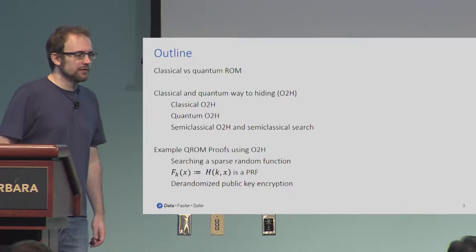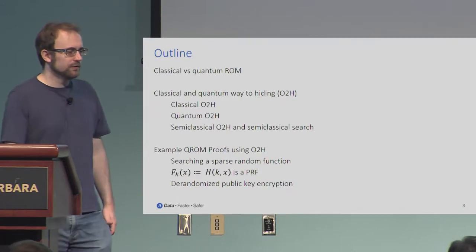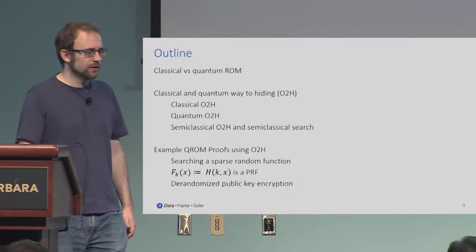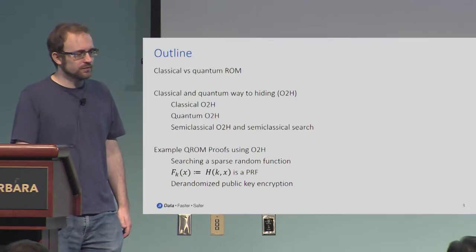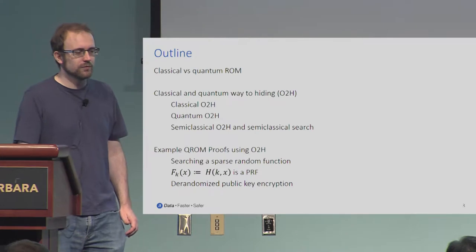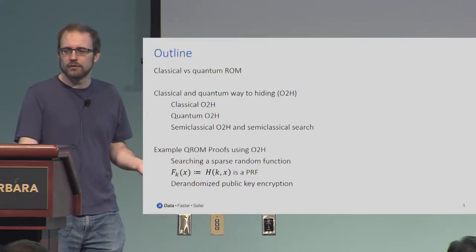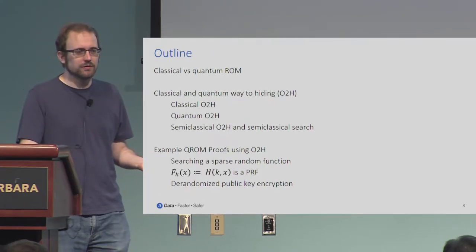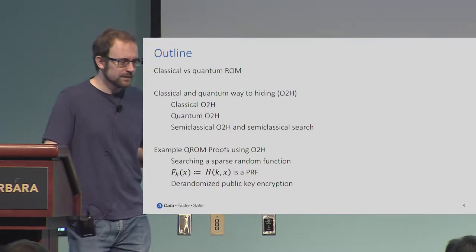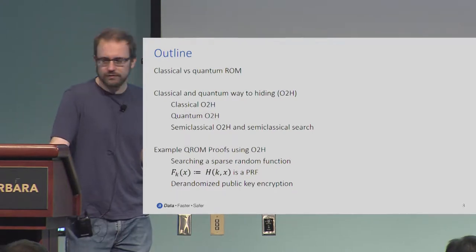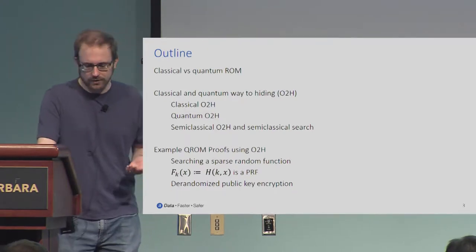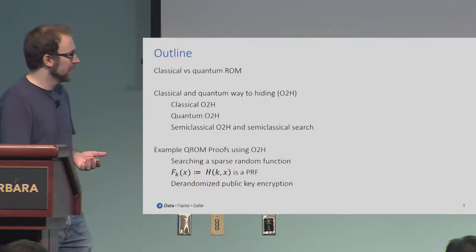An outline of the talk: a brief discussion of the differences between the classical versus the quantum ROM, these new one-way-to-hiding results, and then some examples of how you can use them to prove things in a relatively sane way, time permitting.